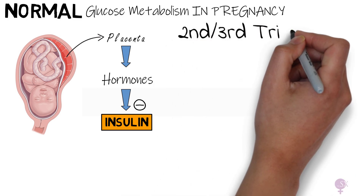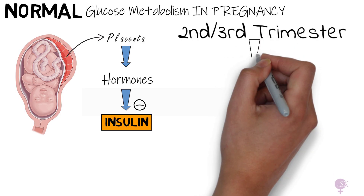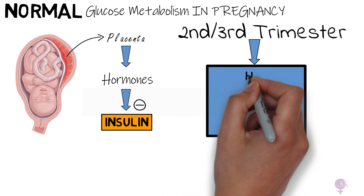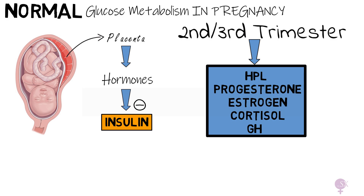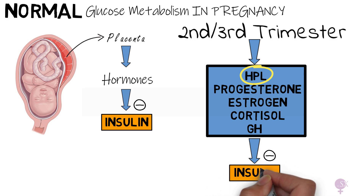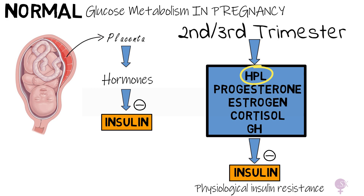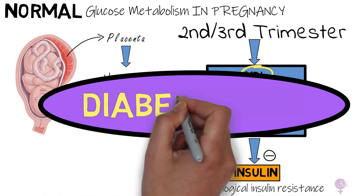Then in the second and third trimesters, the placenta produces HPL (human placental lactogen), progesterone, estrogen, cortisol, and the placental variant of growth hormone. HPL is the most predominant hormone affecting glucose metabolism. These hormones cause the mother's cells to become less sensitive to insulin — what we refer to as a physiological insulin resistance. Therefore this leaves more glucose within the maternal bloodstream, increasing the availability of glucose to the fetus. This is why pregnancy is referred to as a diabetogenic state.